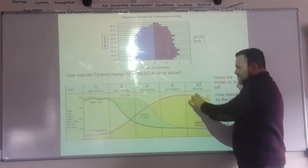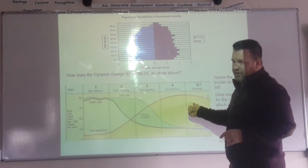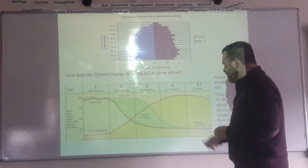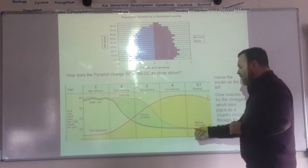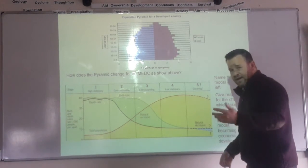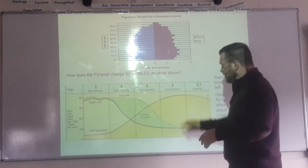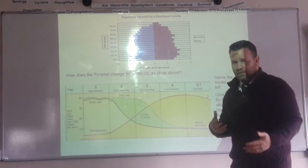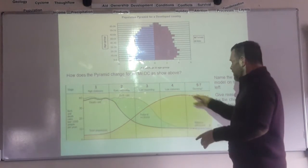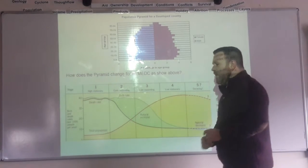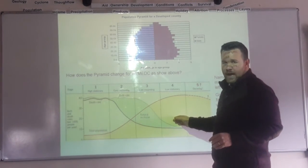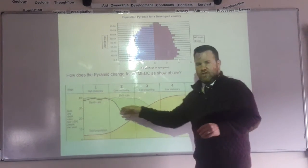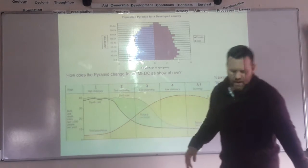Finally, in some countries in stage five, where you've got an ageing population, the birth rate actually falls below the death rate — more people are dying than being born — and so the population starts to decrease. Know what the DTM shows, know what it looks like, and be aware of what influences why these changes take place.